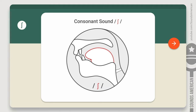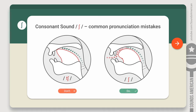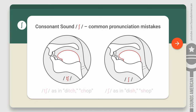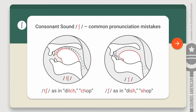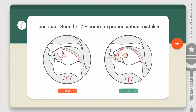Here are a few typical mistakes that people make when pronouncing this sound. Number one: some Spanish speakers confuse the SH and the CH sounds. As you may have already guessed, it leads to misunderstandings. Compare: 'ditch' vs. 'dish', 'chop' vs. 'shop'. Make sure that you don't stop the air before making the SH sound, because that's exactly how the CH sound is made.